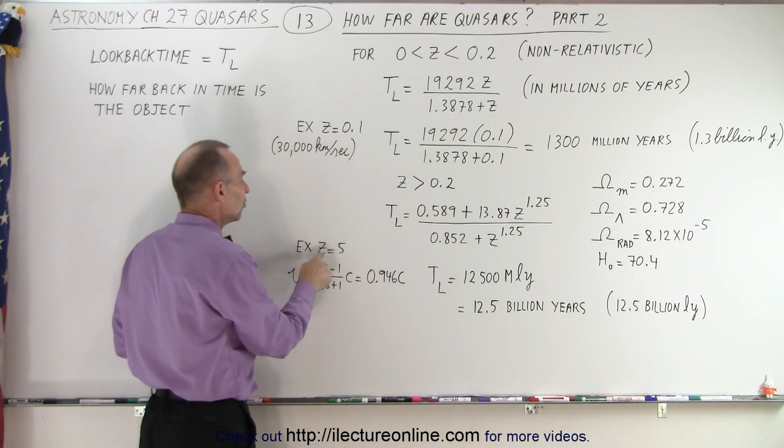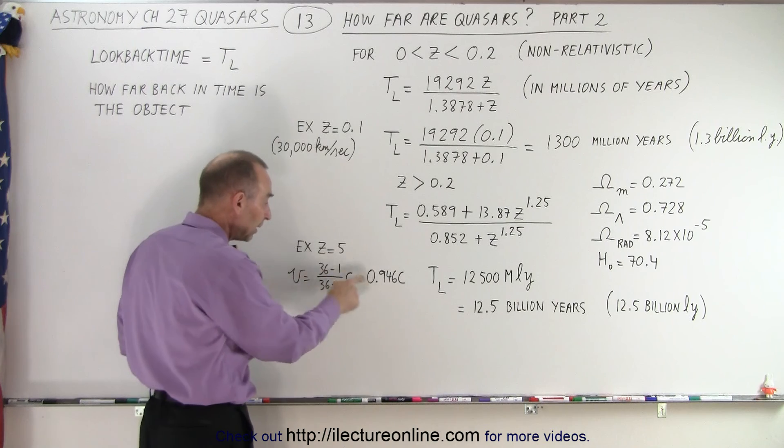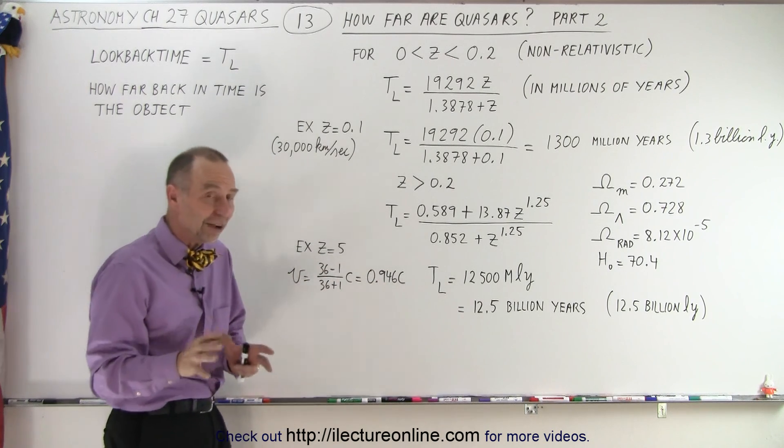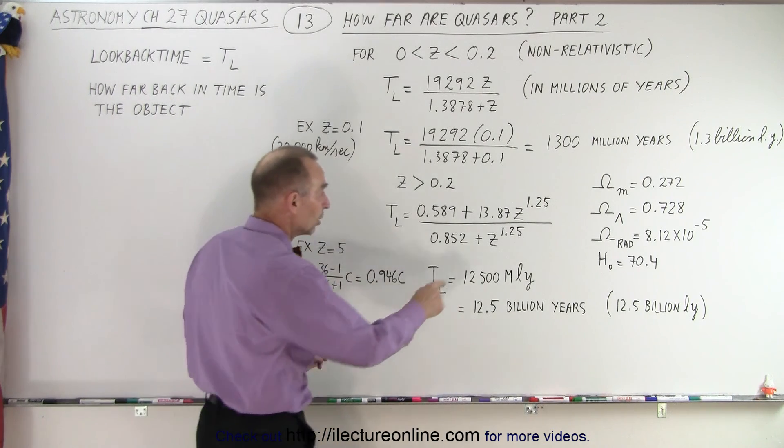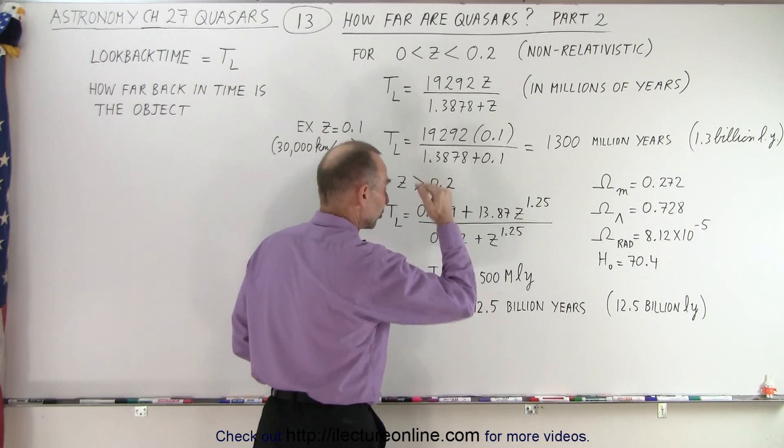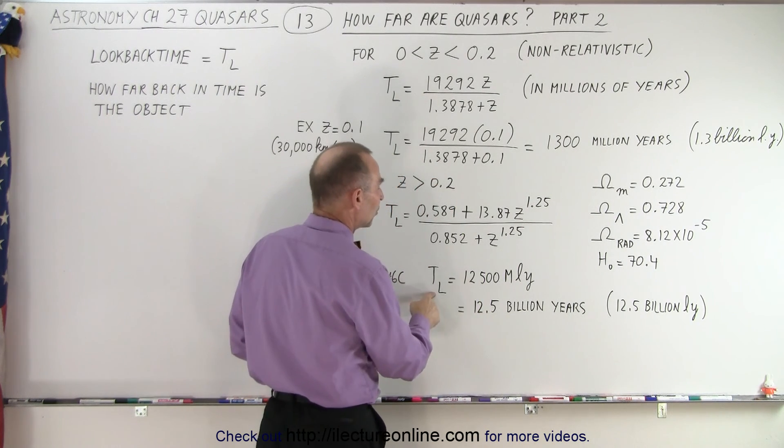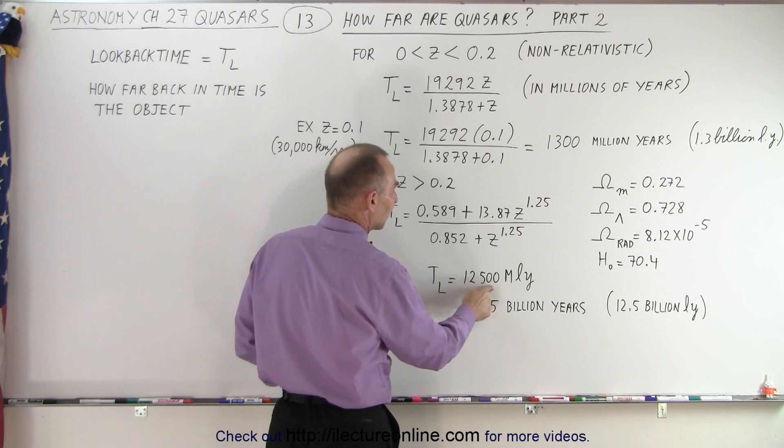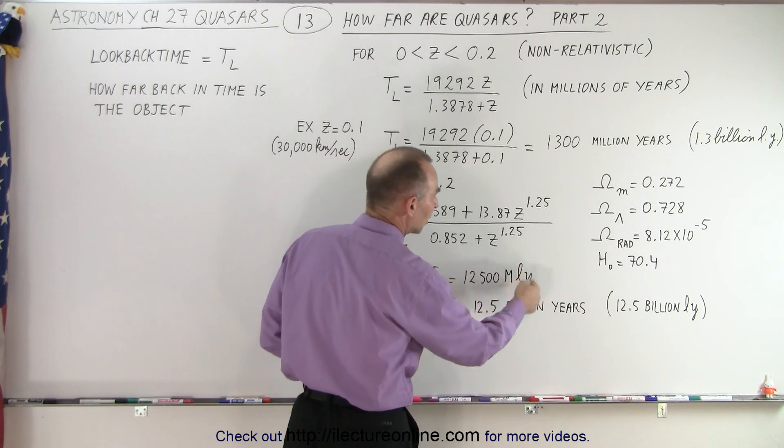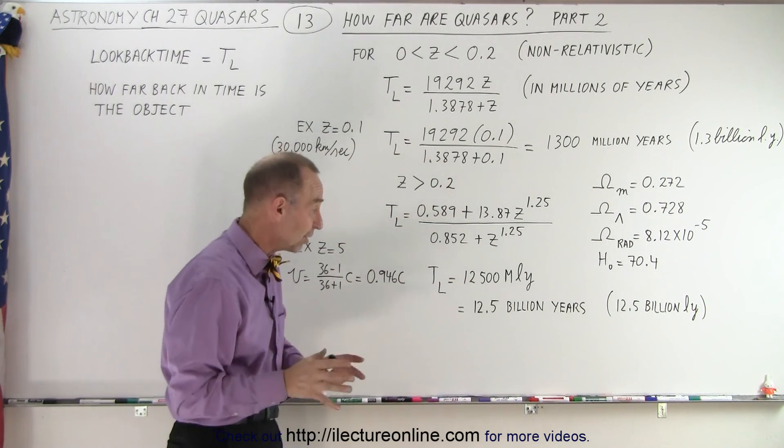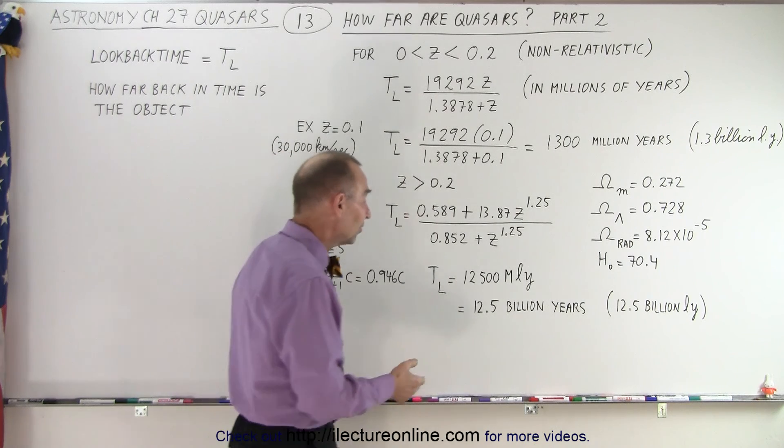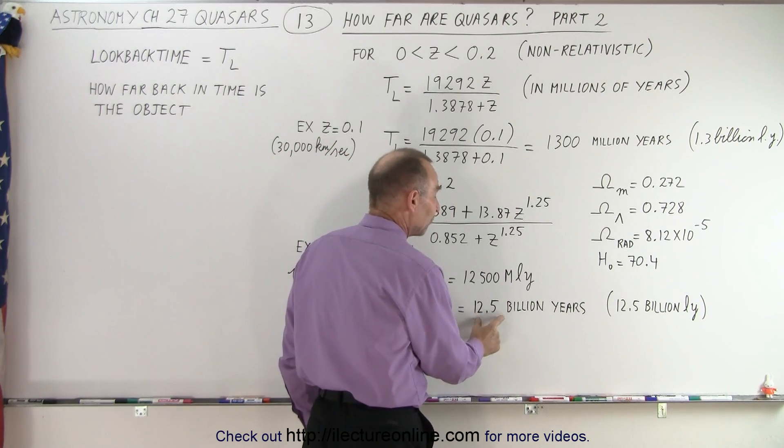For example, if you plug in the value of z equals 5, that means it's traveling at almost 95% of the speed of light. You plug in the number 5 here and the number 5 there, and you turn the crank with your calculator, you come out to have 12,500. That's in terms of millions of years, and that means that the event happened 12 and a half billion years ago.